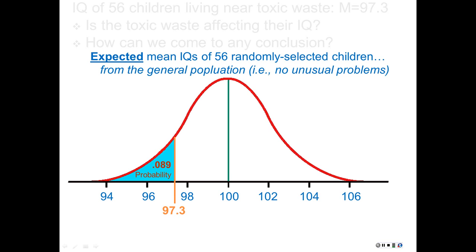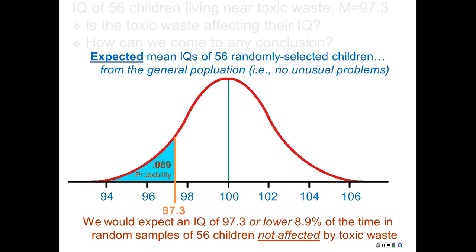Now whether that's enough for you to say the toxic waste is affecting the children or not — stats can't help you too much with that. That has to be a judgment call of how scared you should be. But the probability helps us figure this stuff out, and understanding probability helps us interpret this.